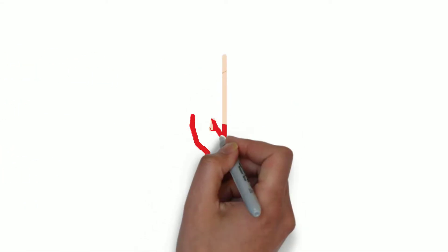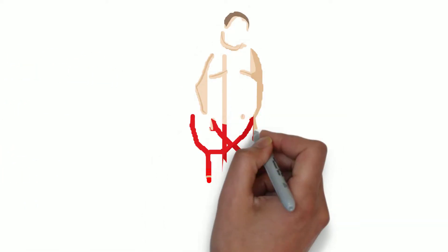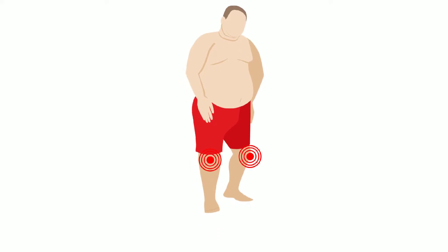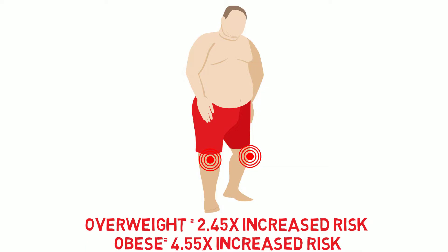However, it also plays a role in the development of osteoarthritis, particularly knee osteoarthritis, with studies finding that people who are overweight have a 2.45 increased risk of developing the condition, and almost twice that in people who are obese, at 4.55. Therefore today we will be breaking down the surprising ways that excess body fat can lead to knee osteoarthritis, or knee OA as we will be referring to it in this video.